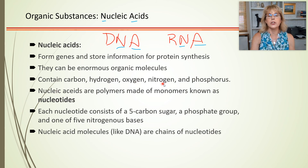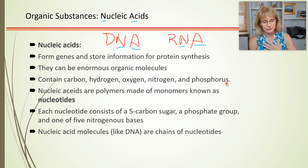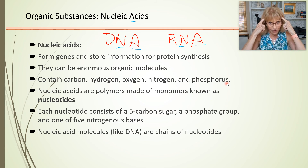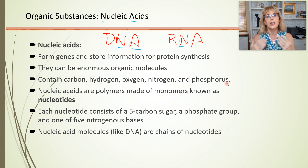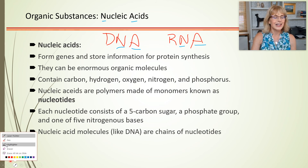Nucleic acids are made out of carbon, hydrogen, oxygen, and nitrogen — similar to proteins — but they also require phosphorus. When we later talk about how the kidney manages substances, you should know that every one of the monomers that build up your DNA or RNA requires a phosphorus.